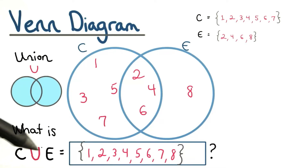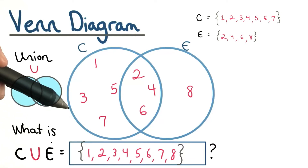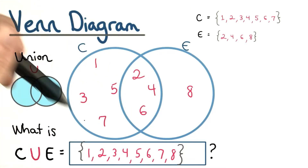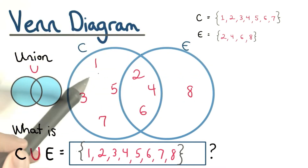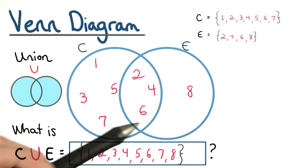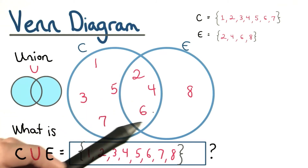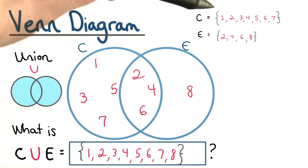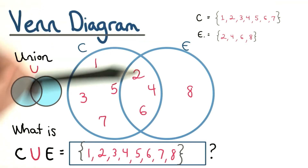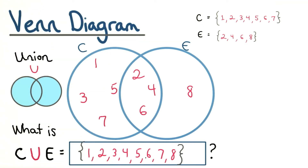To find the set of C union E, we want any elements that are in set C or in set E. I list the numbers in order with curly braces on the ends and commas in between. For the two, four, and six, I don't need to list them twice. I know that they're in set C and in set E, but I only need to list them once in the union.